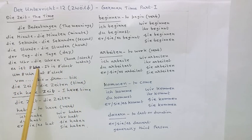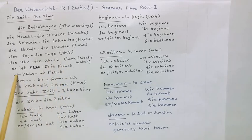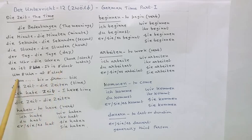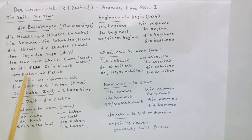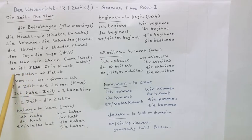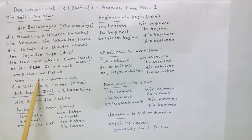Es ist acht Uhr — it is 8 o'clock. Um acht Uhr — at 8 o'clock. Now this is very important in case of telling German times: we always use 'um'. Um acht Uhr, oder um neun Uhr, um zehn Uhr — that is at 8 o'clock. Von ... bis — that is 'from ... till'.